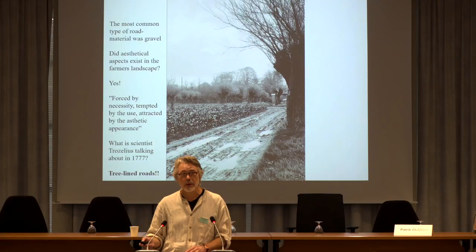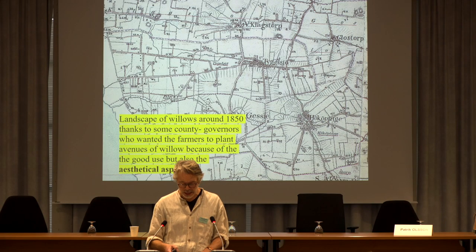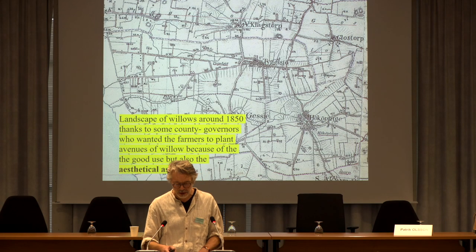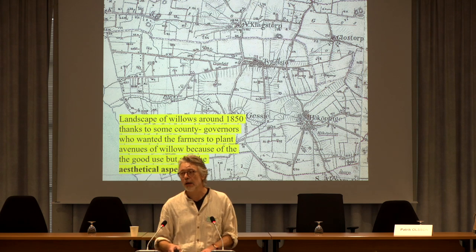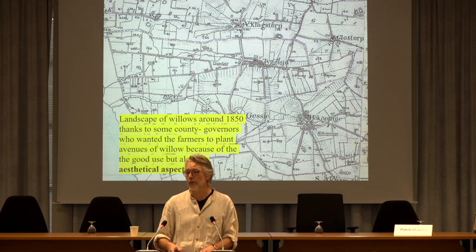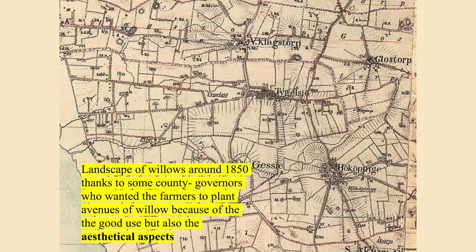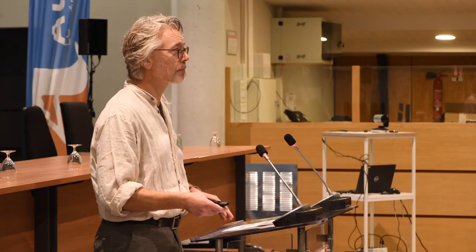Willow — unless you couldn't find elm, lime, or maple trees — use willow. And this had a great impact on the landscape in the 19th century, where hundreds of thousands of willow trees were planted in the farmer's landscape.